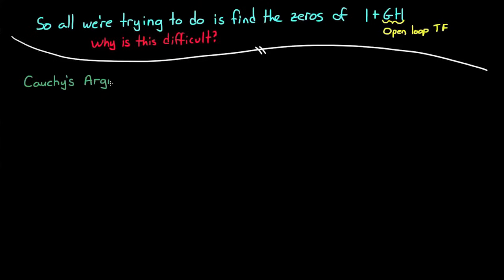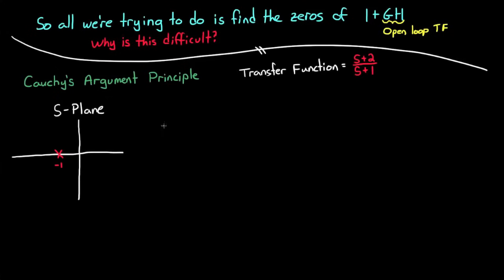To start, we need to discuss Cauchy's argument principle. Let's say that we have this arbitrary transfer function, s plus 2 over s plus 1. And I'll put the s-plane on the left here and mark the locations of the poles and zeros for our transfer function. There's a pole at minus 1 and a zero at minus 2.